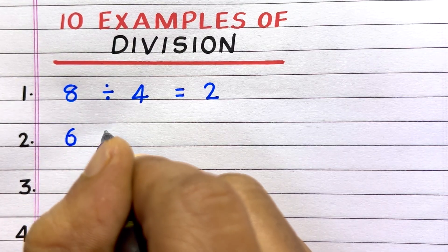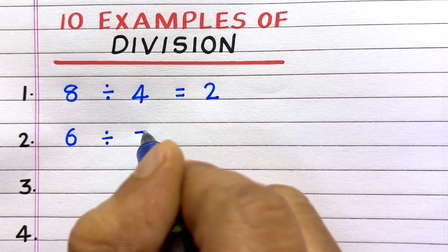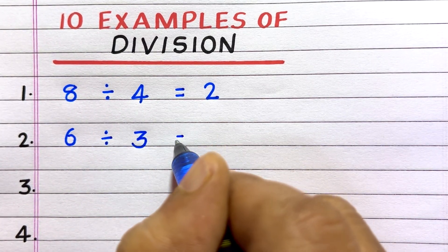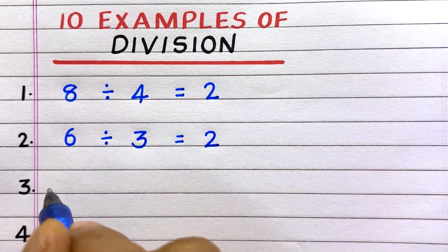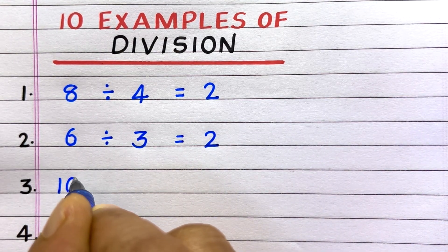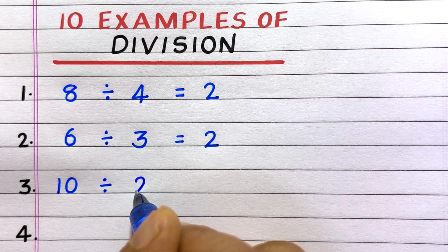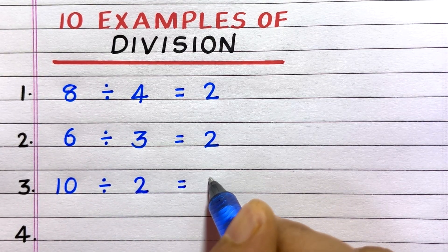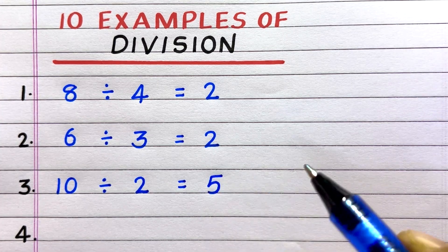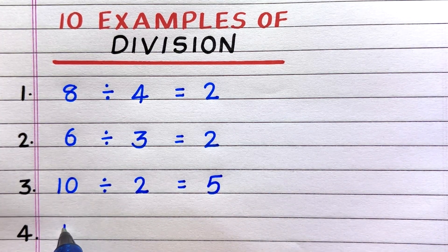Second, 6 divided by 3 equals 2. Third, 10 divided by 2 equals 5.